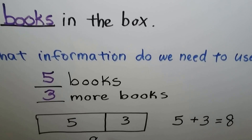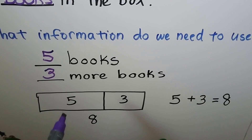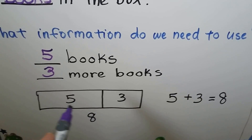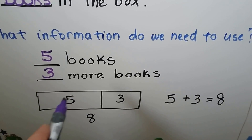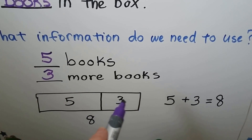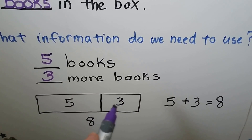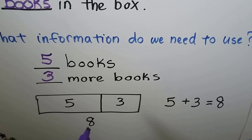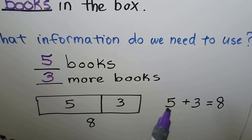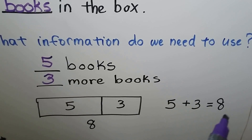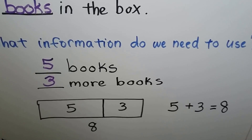And we can use a bar model. This is the five books. This is the three books. Together they're eight books. Five plus three equals eight.